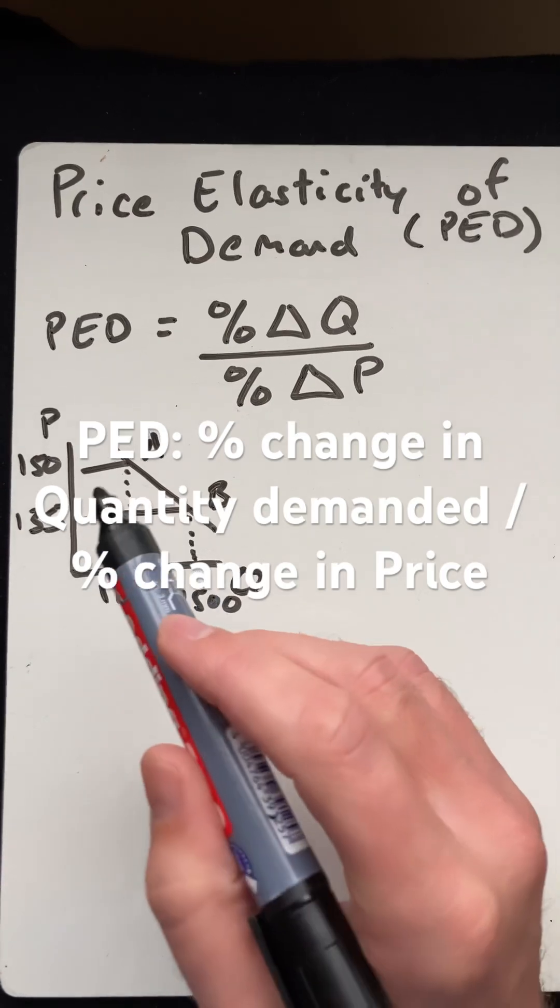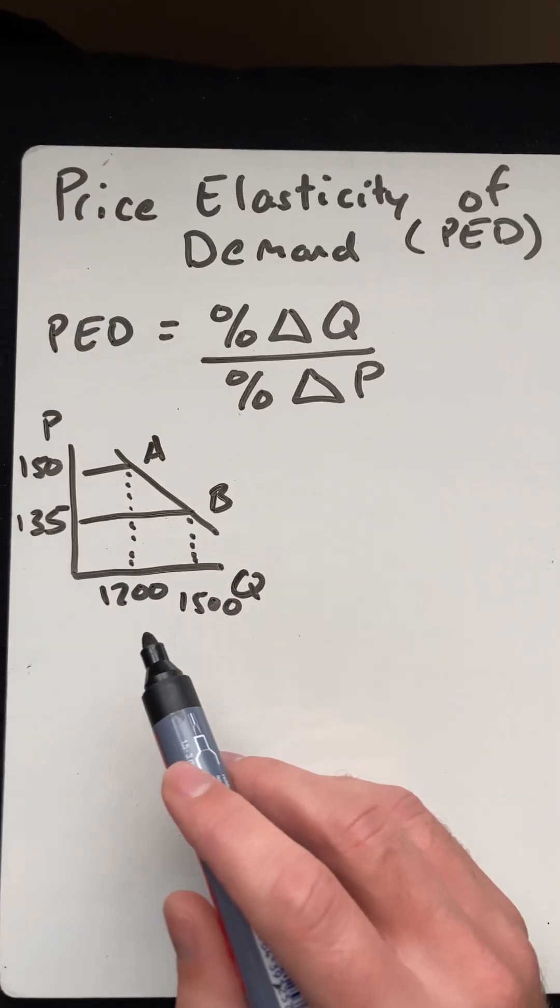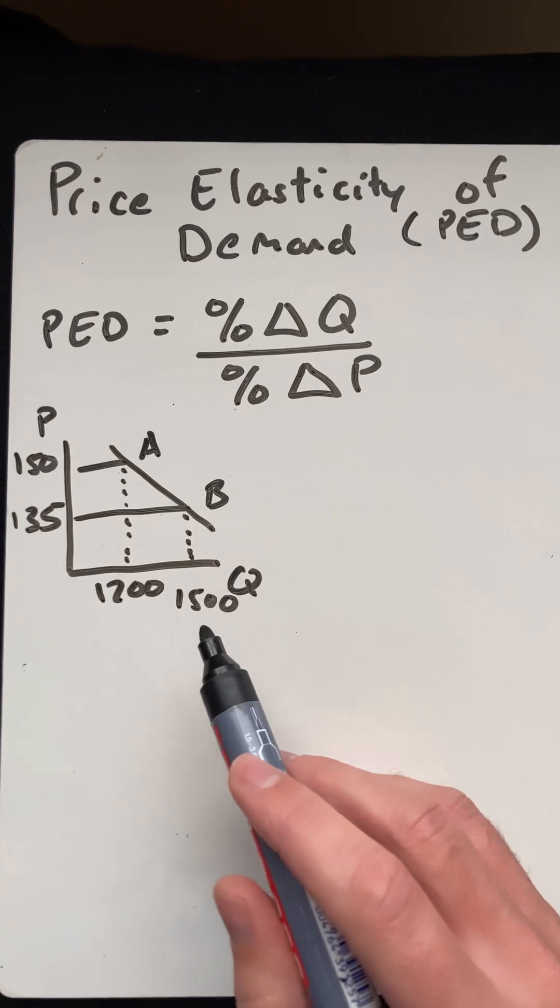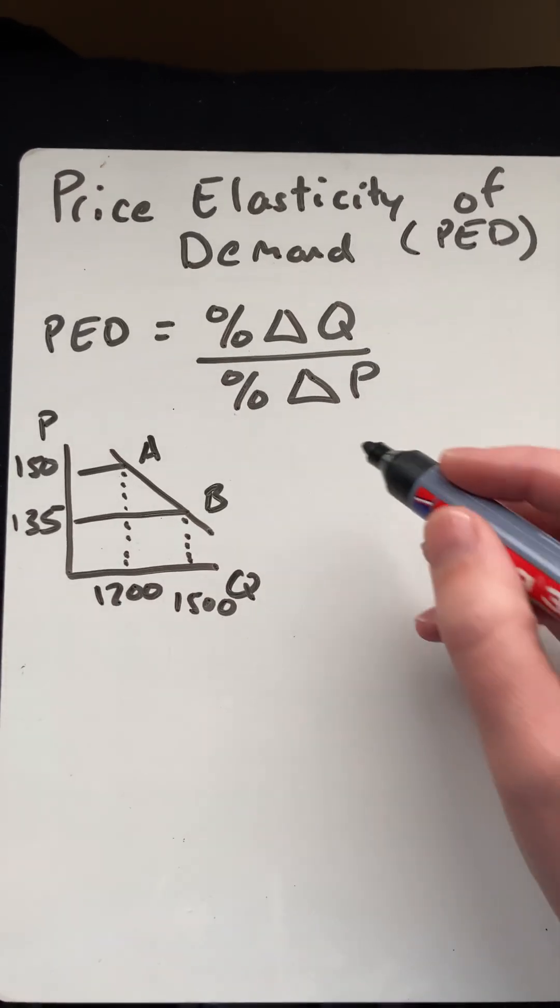Look at an example. The price drops from 150 to 135. Quantity demand goes up from 1,200 to 1,500. So let's work that out.